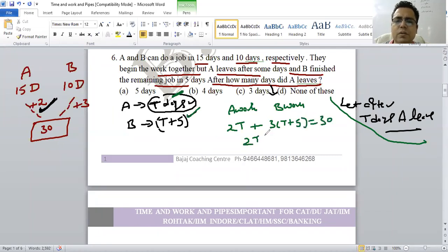Just a small equation, let's solve it. 5T is equal to 15. 30 minus 15 is equal to 15. What is T value? 3 days. This is the question.